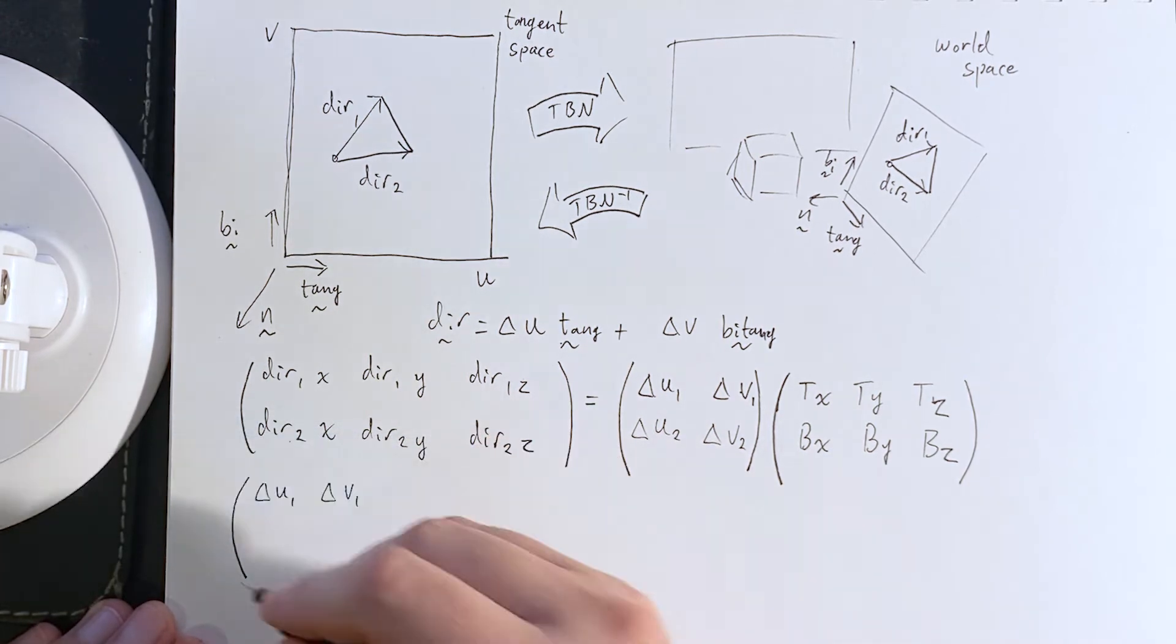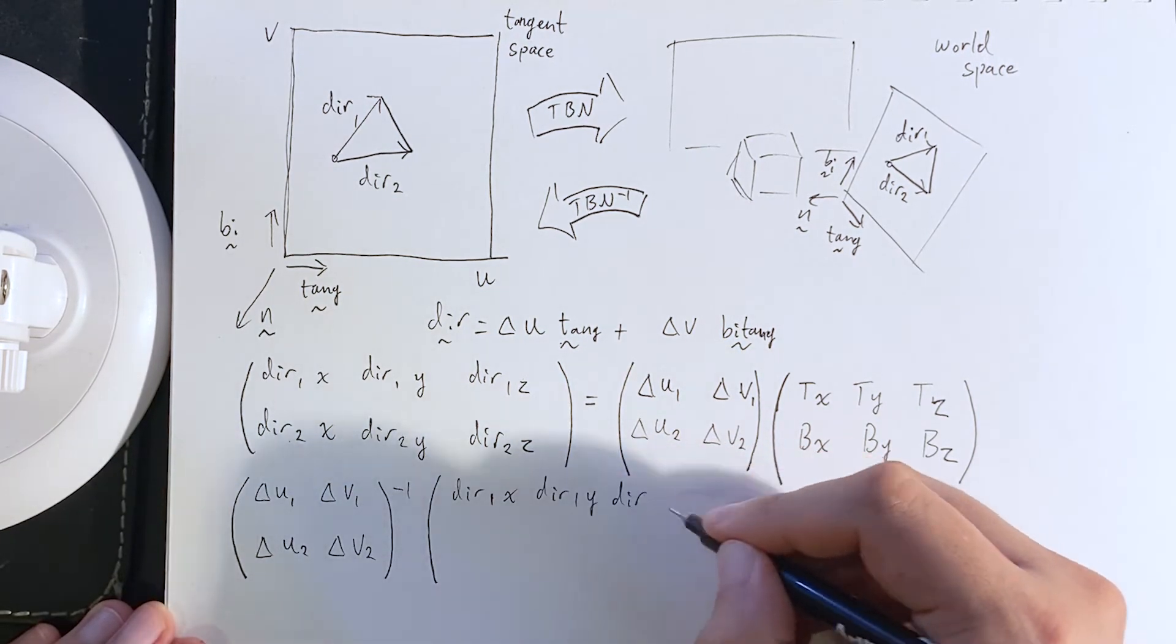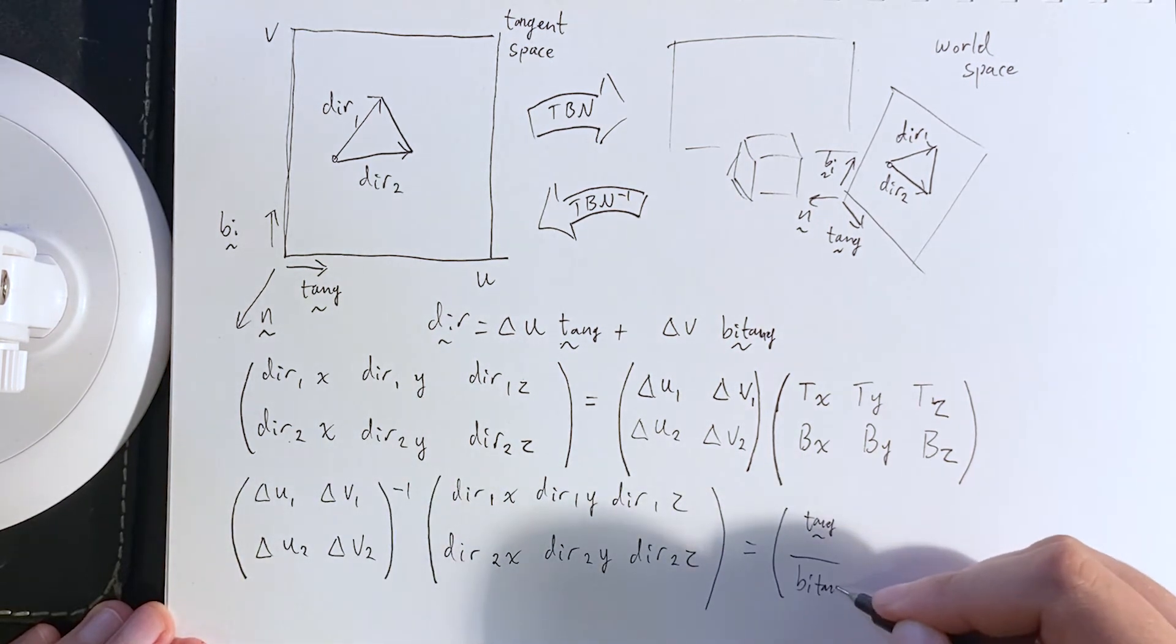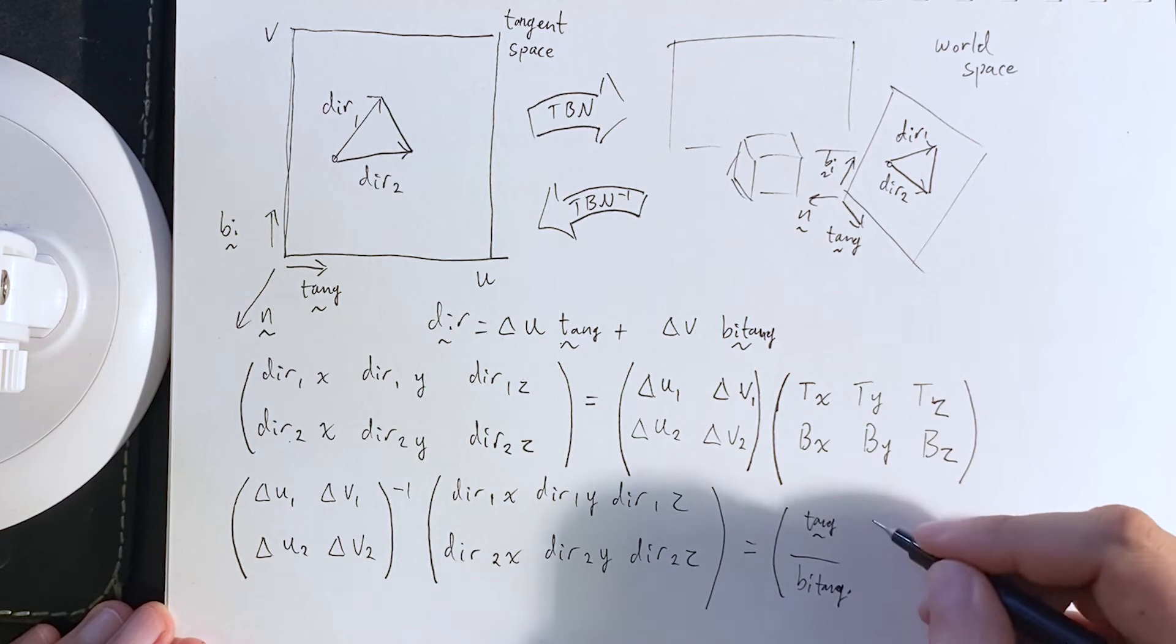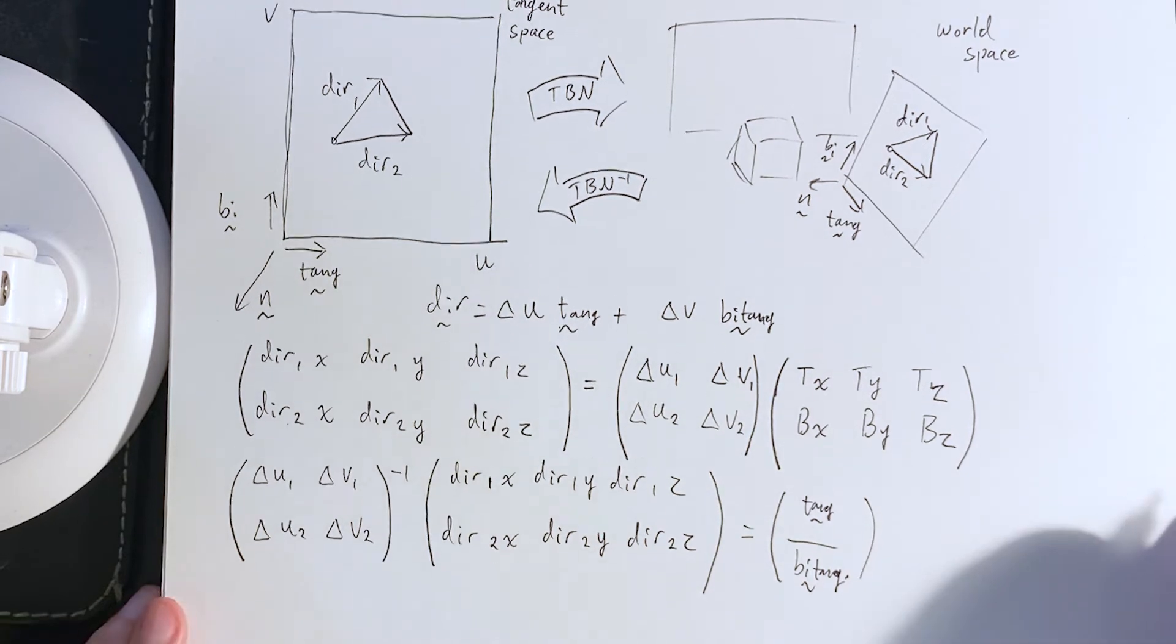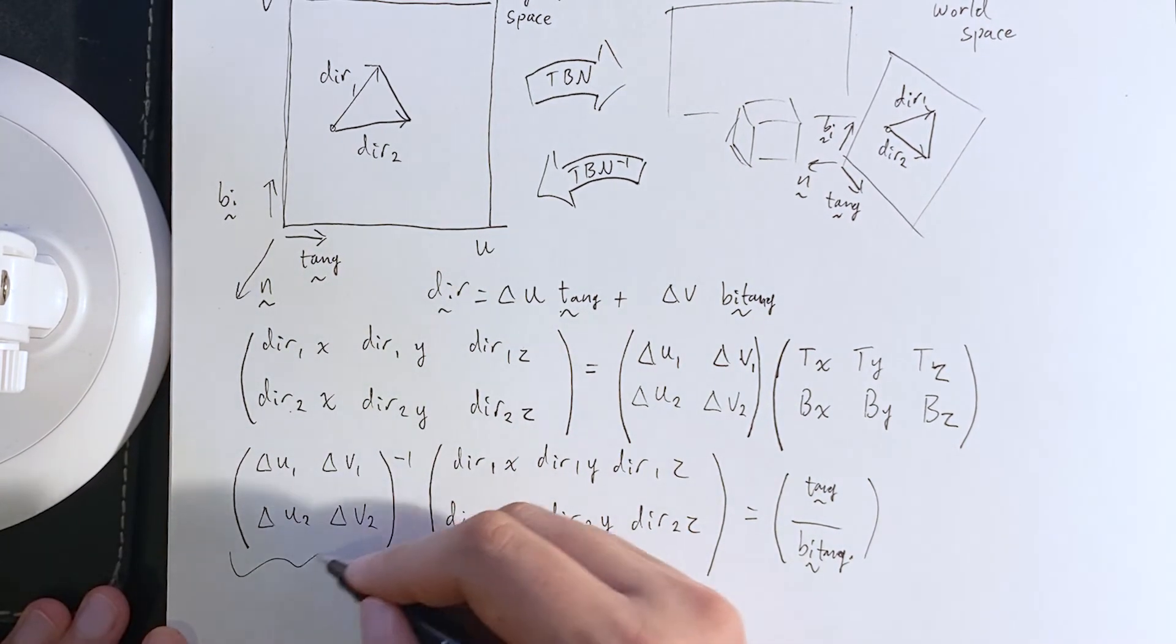Okay. And then the corresponding rows from this matrix multiplication will be the tangent and bitangent. Of course,